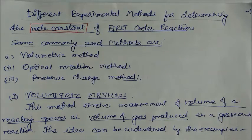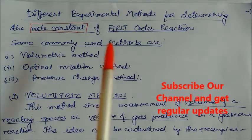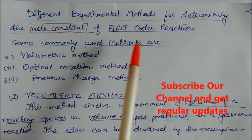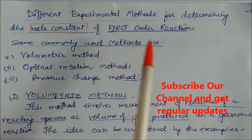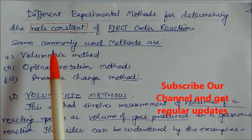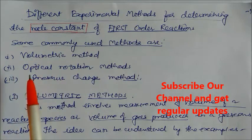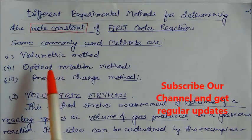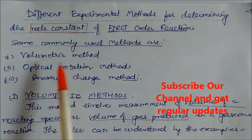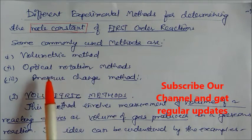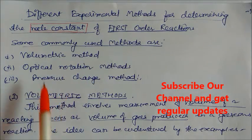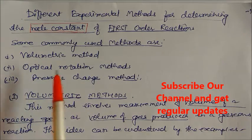In this session we will learn different experimental methods for determining the rate constant of a first order reaction. There are three commonly used methods: the volumetric method, the optical rotation method, and the pressure change method.